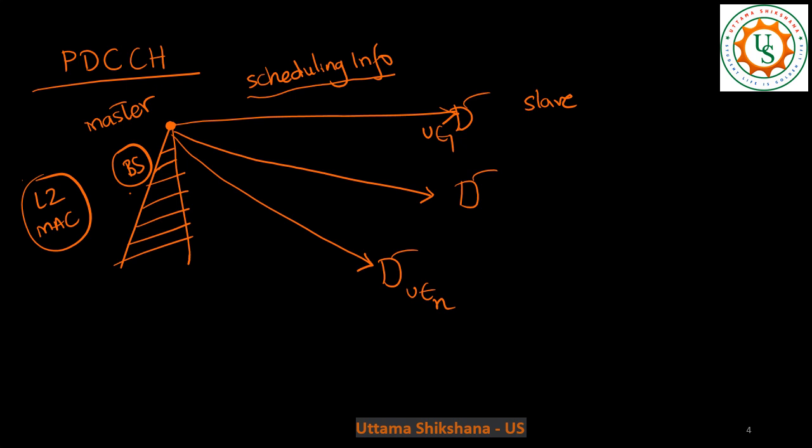Let's say there is a base station and multiple UEs are connected to it. Usually a UE doesn't have the information of the other UEs, whereas the base station has the information of all the UEs connected to it. This means the base station can take a better decision on when a UE can be triggered for transmission or reception, or even allocate resources. So basically, the base station works as a master and the UE works as a slave.